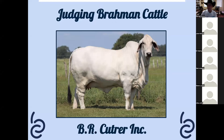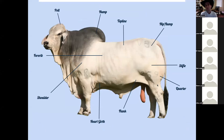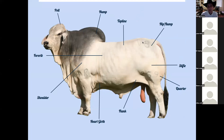Hopefully you take something away from this that's valuable and you can plug into your operation. First and foremost, I think it's important to understand a few anatomy terms before we move further, so we're all discussing the same features. We've got labels pointing at different things - for instance the shoulder, the full rib, and the body. The top line refers to this entire section here, and we'll get into much more detail as we go.